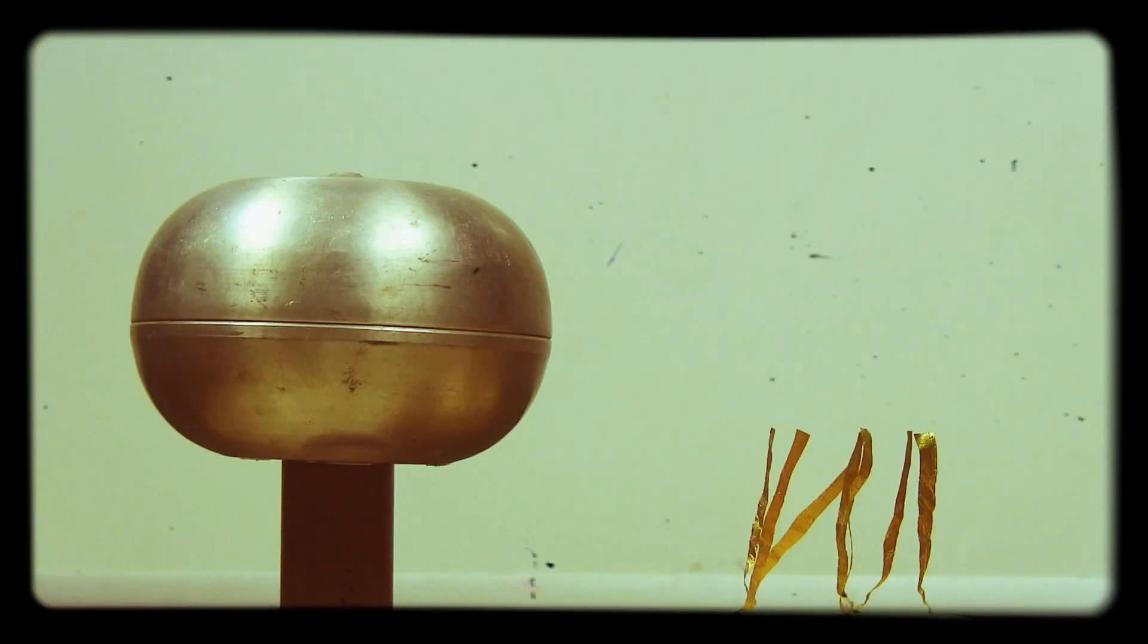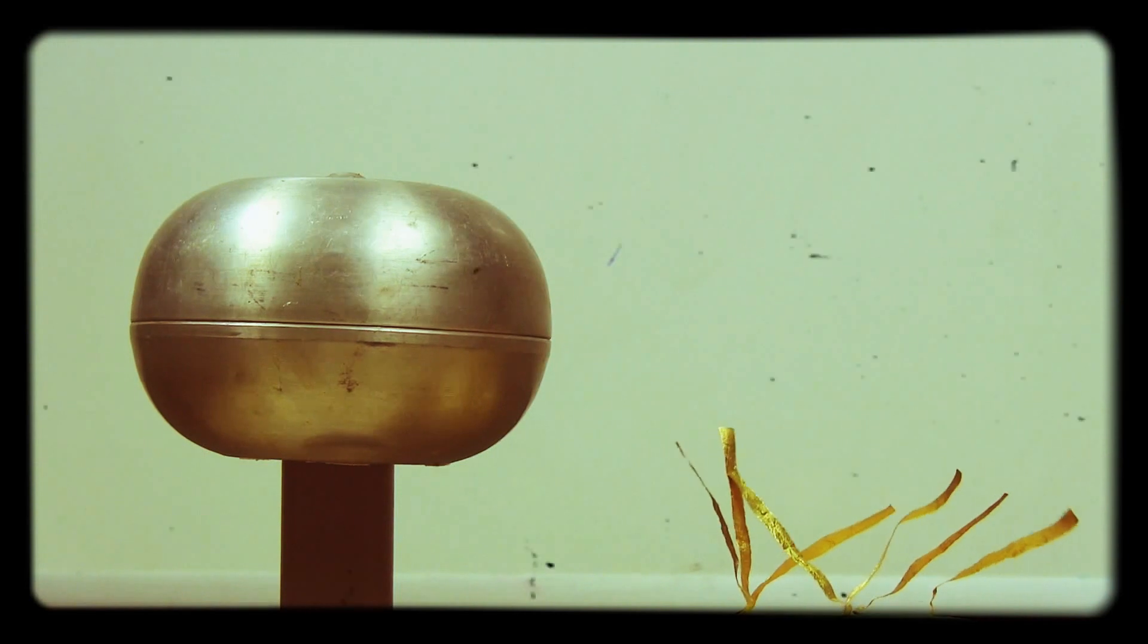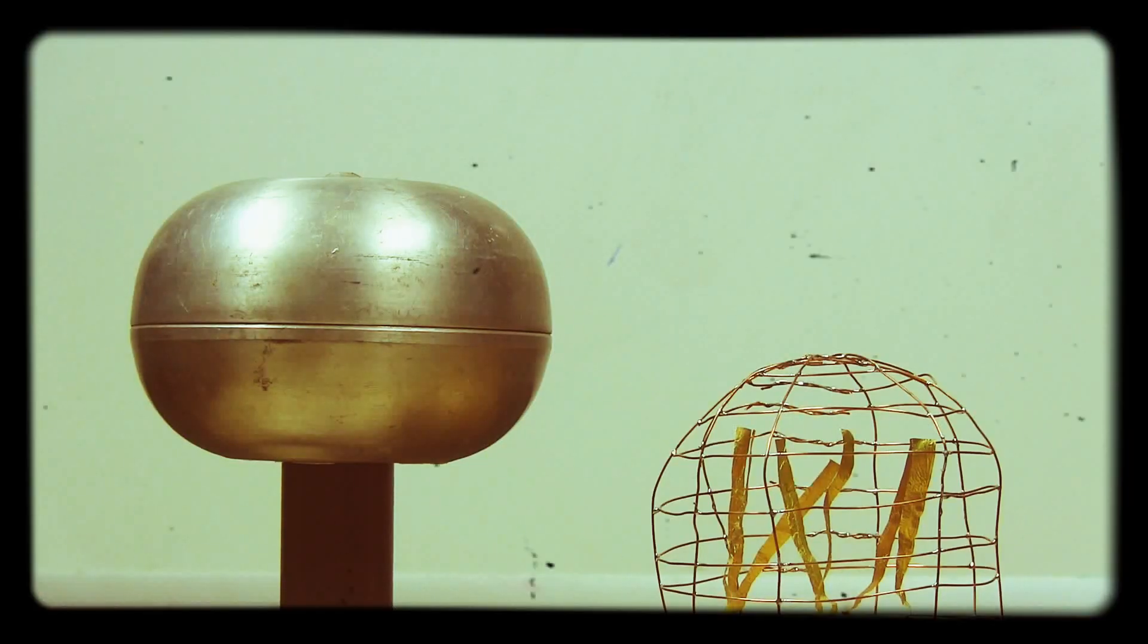Without a Faraday cage, these foil streamers get pulled on like crazy by the charge in the generator. But with a Faraday cage, they barely move.